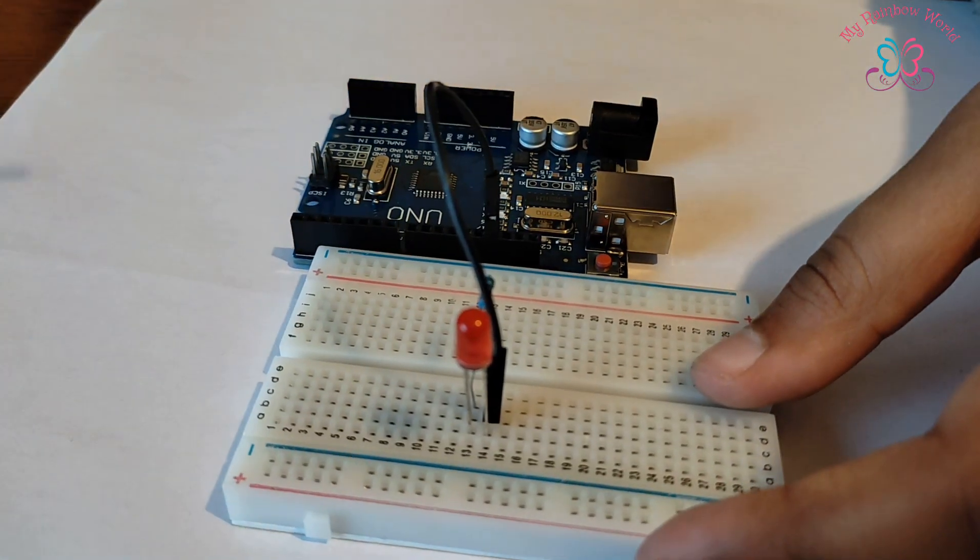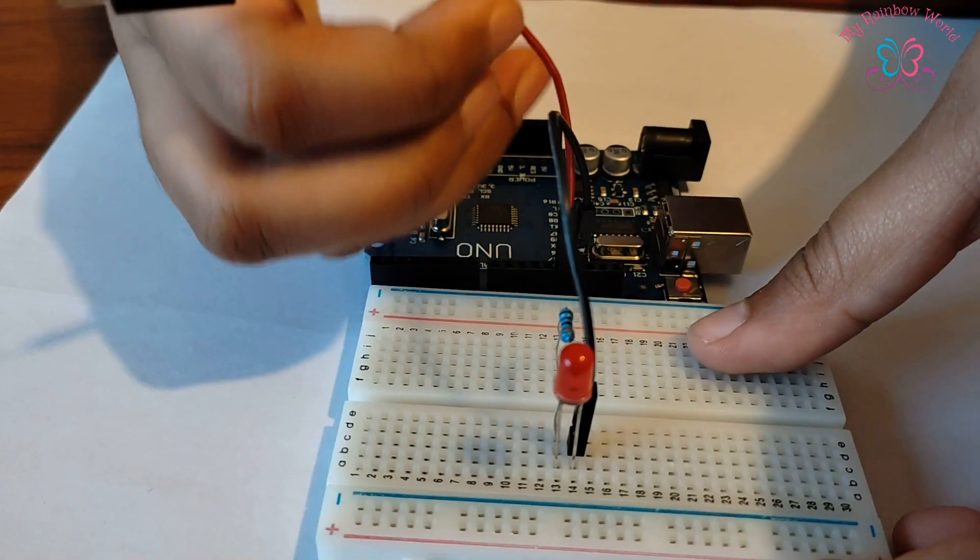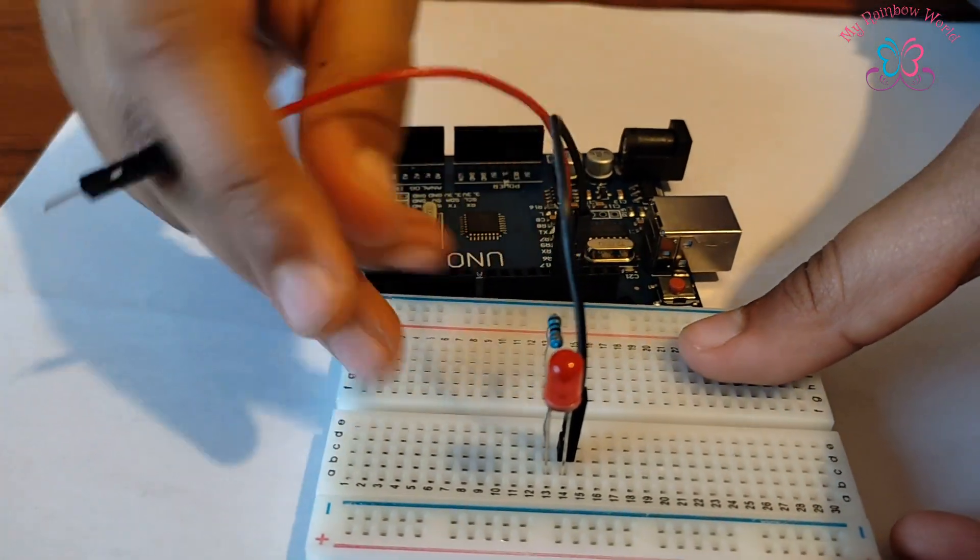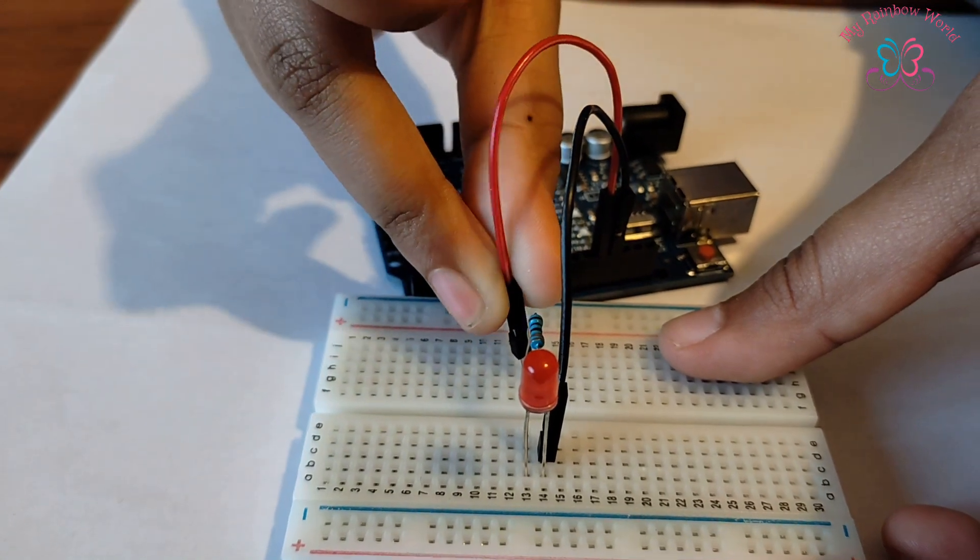Next, connect one end of the red jumper to the resistor and the other end to pin number 13 on Arduino.